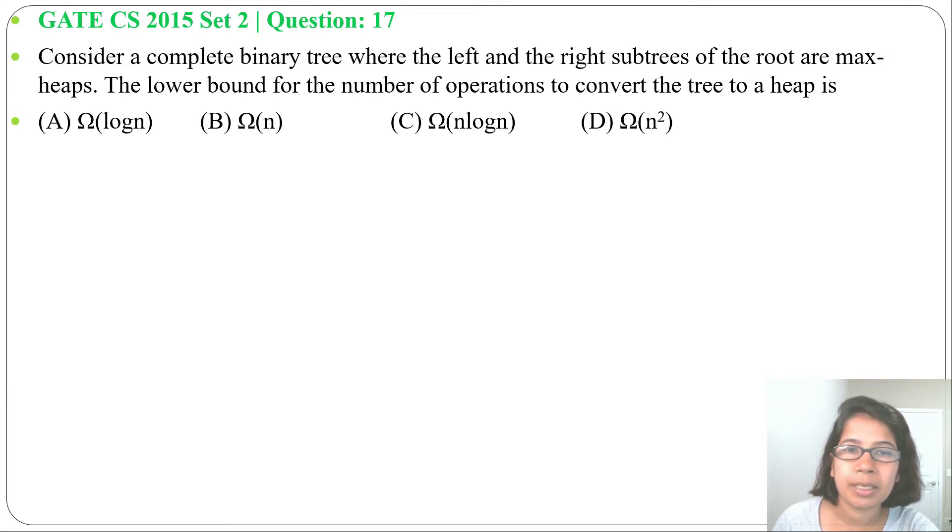Consider a complete binary tree where the left and right subtree of the root are max-heaps. The lower bound for the number of operations to convert the tree to a heap is - and four options are given. So what it is asking: